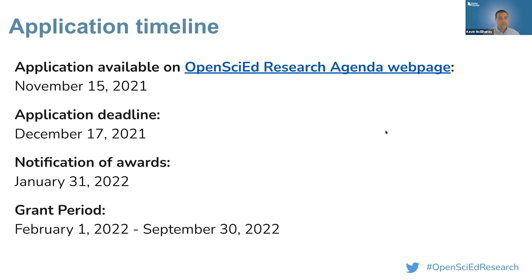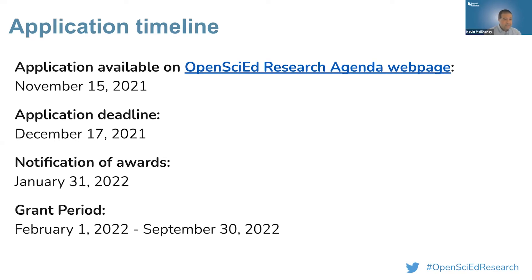Here's the timeline. We're finalizing the application materials and will release them by November 15th — next Monday — available on our landing page at Digital Promise. The deadline for applications is December 17th. We'll review them and get back to everyone by January 31st. The grant period will be February 1st through September 30th.